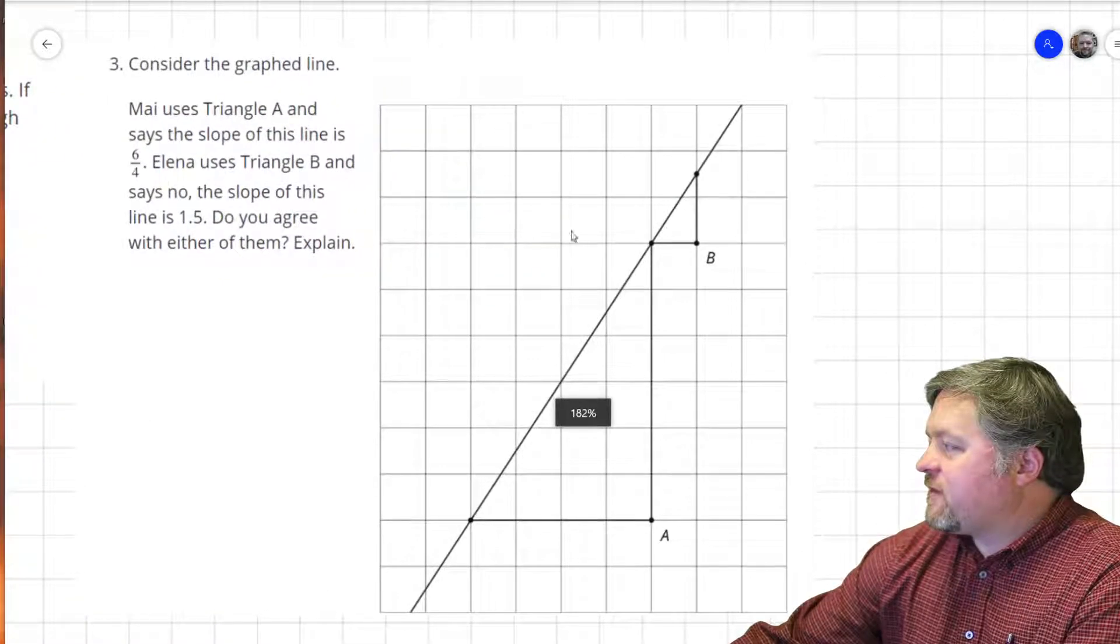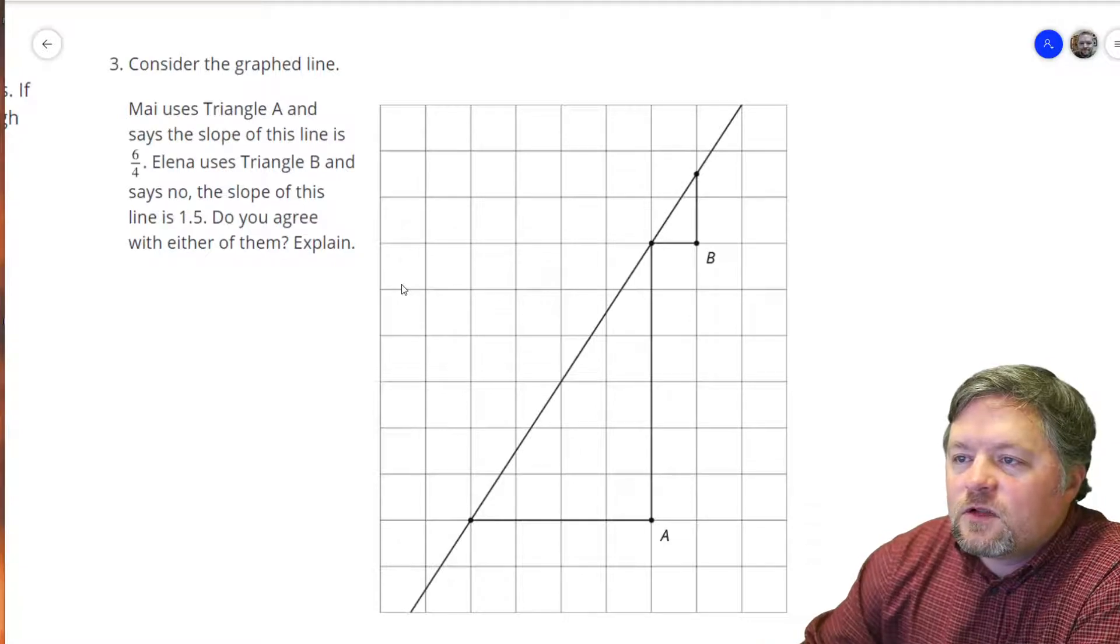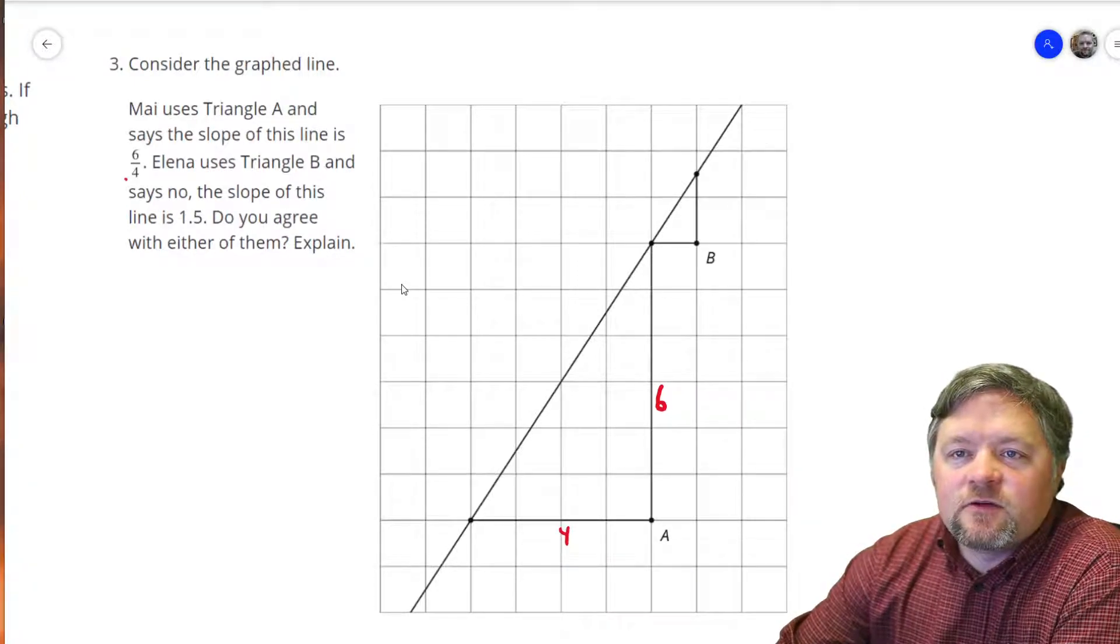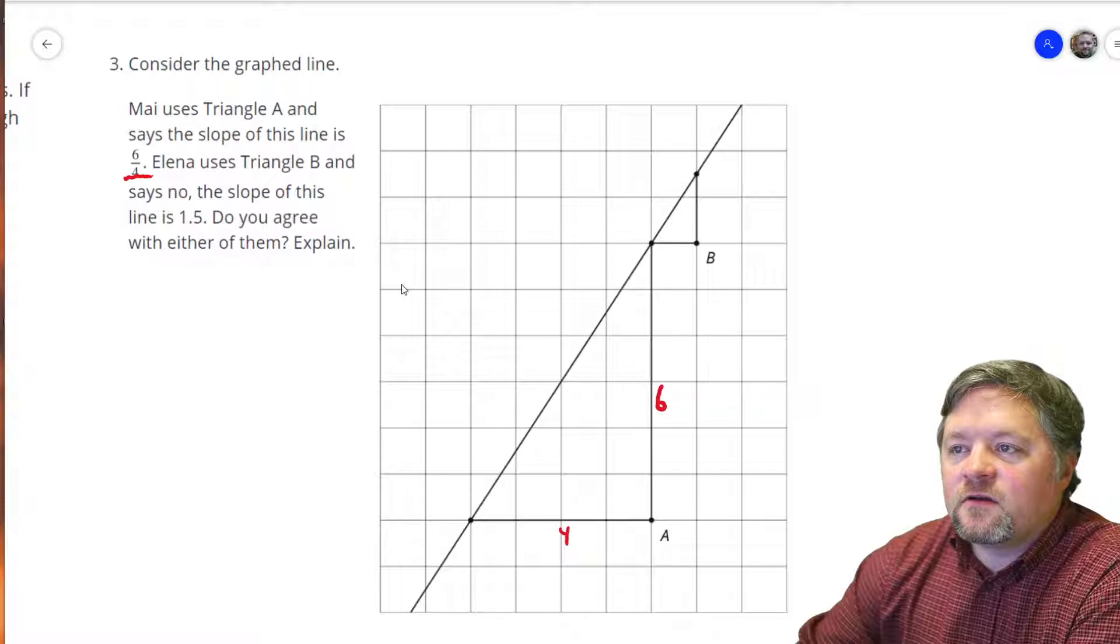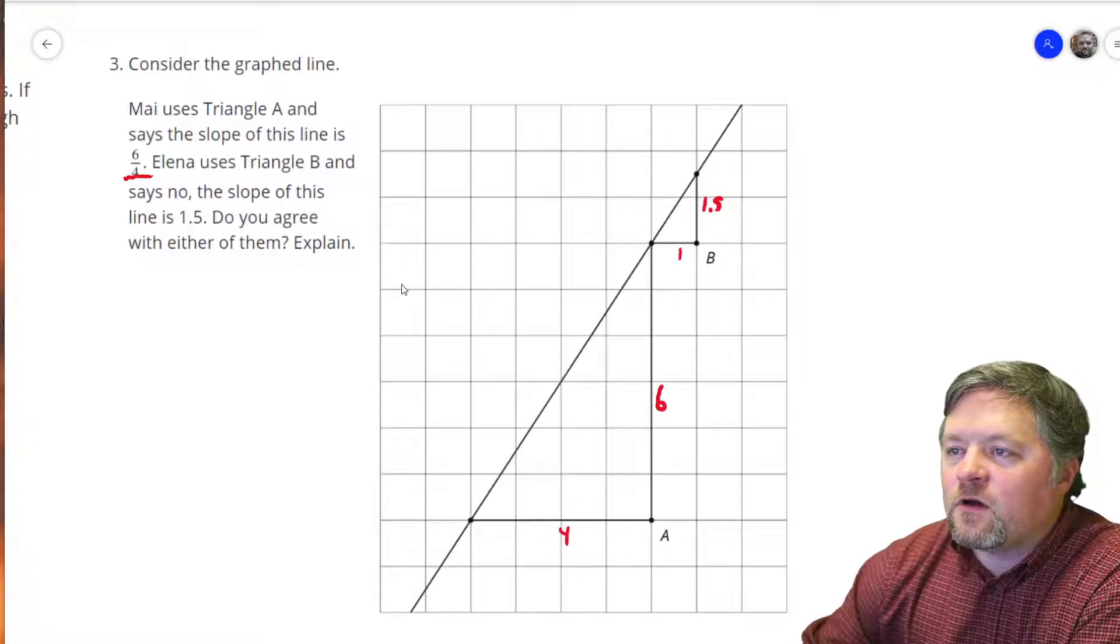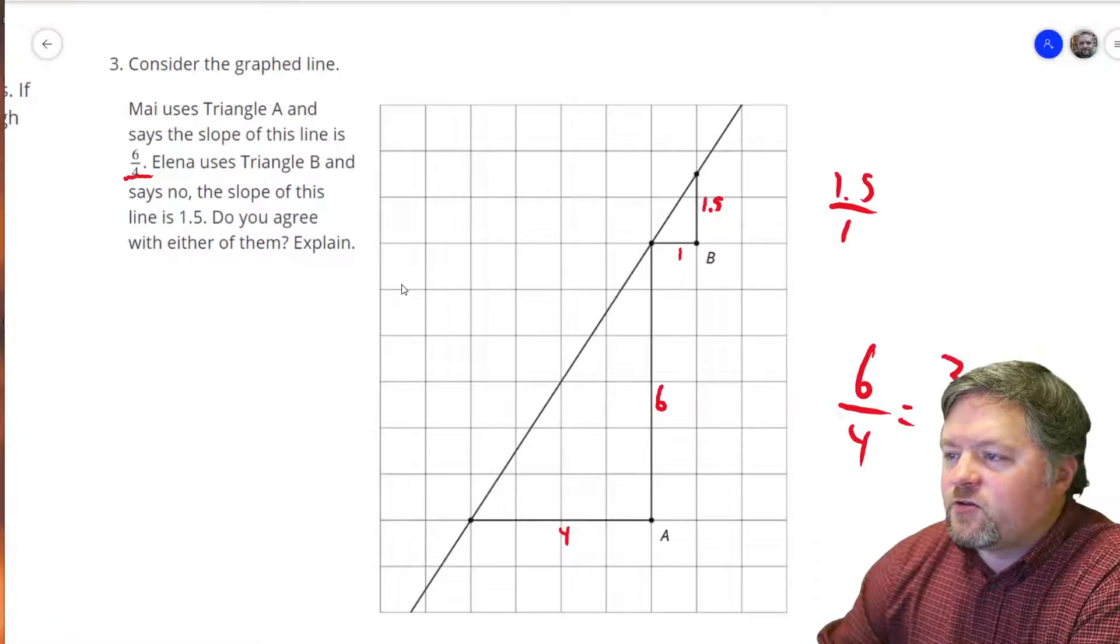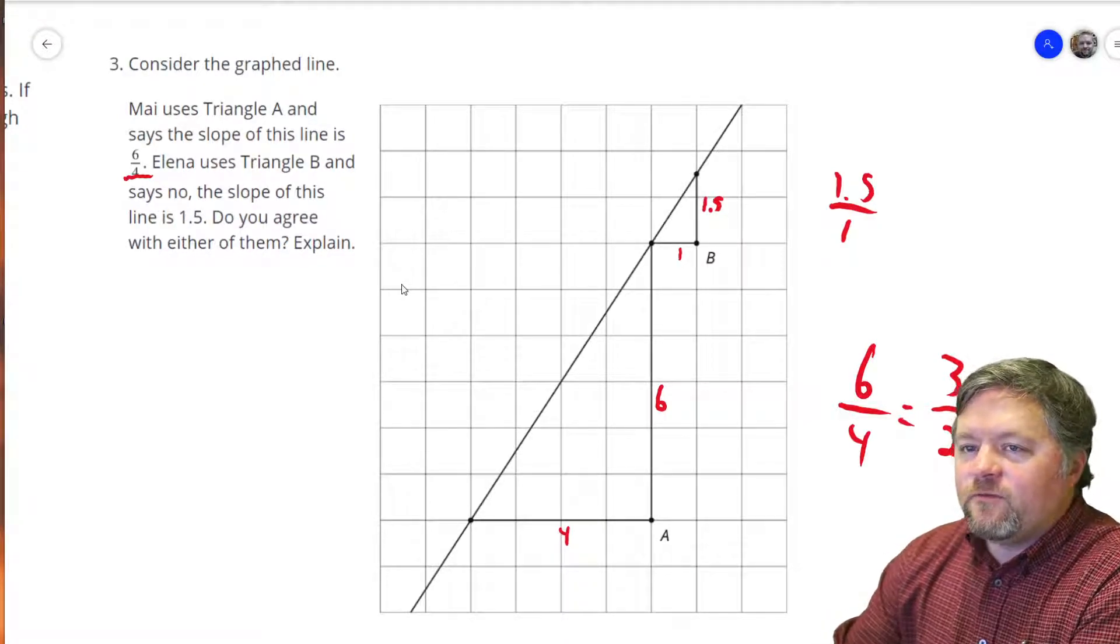Consider the graphed line. Mai uses triangle A and says the slope of this line is 6 over 4. Well, let's check that. Height of this triangle is 6 over 4. So yes, I would agree with that. Now, let's check this one. Elena uses triangle B, the smaller triangle, and says the slope is 1.5. Looks like that's about 1.5, and we go over 1. So rise of 1.5 over 1. This one has a rise of 6 over 4. 6 over 4 would simplify to 3 over 2. 3 over 2 is 1.5.